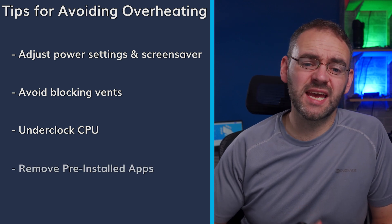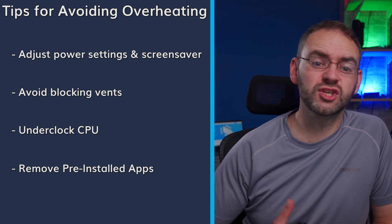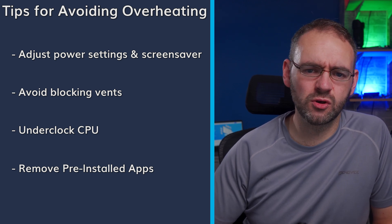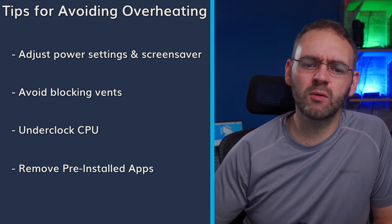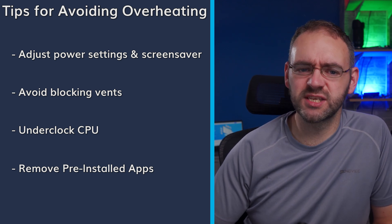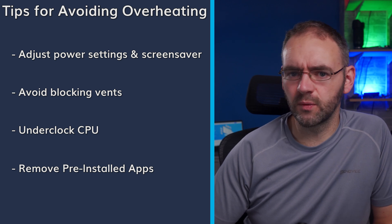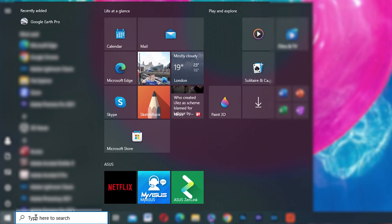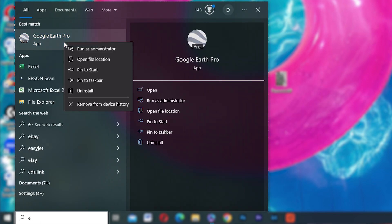Windows 10 and Windows 11 often come with pre-installed or suggested apps that run in the background and consume system resources. Removing these unnecessary apps can help reduce the workload on your CPU and other components, resulting in lower heat generation. To remove these apps, click on the Start menu, right-click on the app you want to remove, and select Uninstall or Unpin from Start.